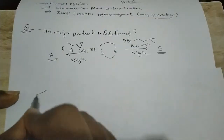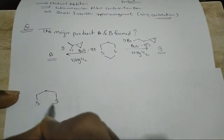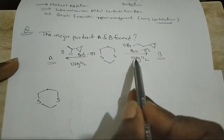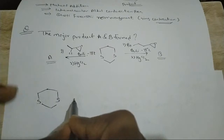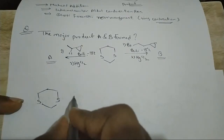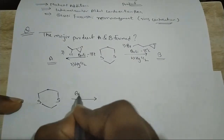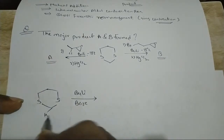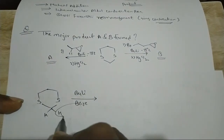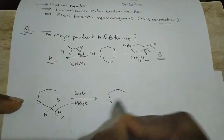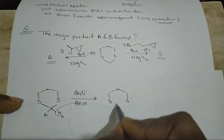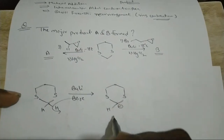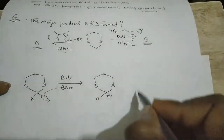Now let's work on B. Again, n-butyllithium is given as a base. The butyllithium base abstracts the proton, giving us a carbanion. The negative charge is then treated further.